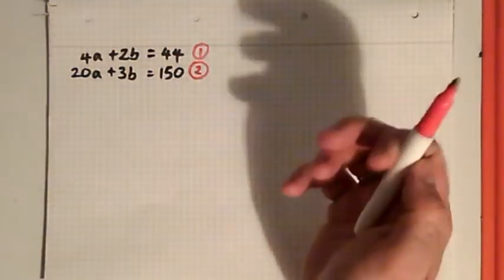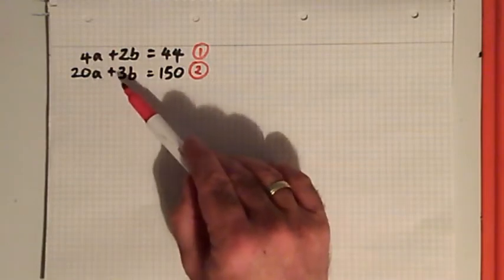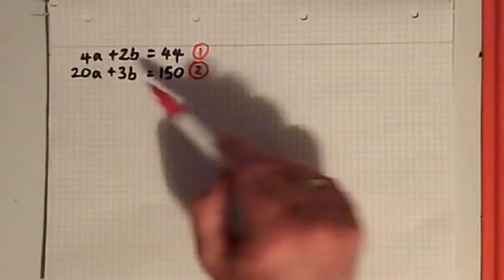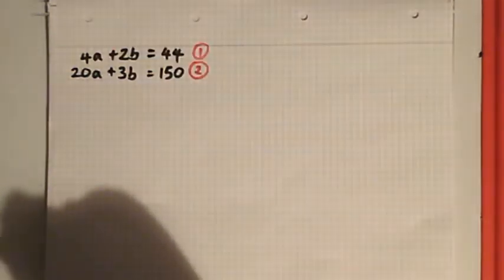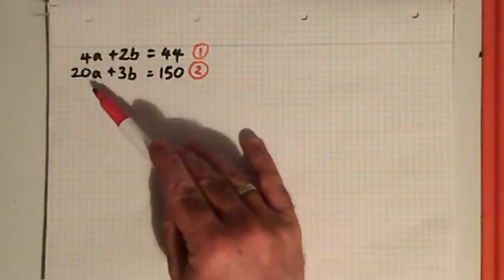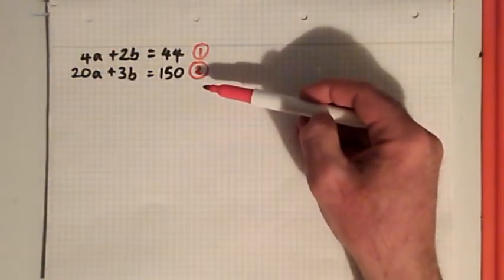All I've got to do is think of a random value for a, like 5, and then that would make 20a = 100, so 3b would have to be 50 to make it balance, and b would be 16 and 2/3. There are infinite pairs of a and b that would make the second equation work as well.